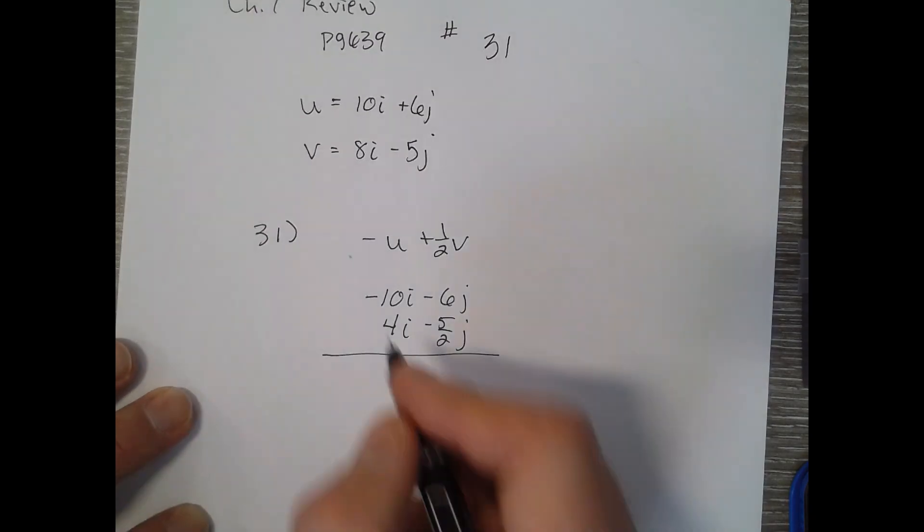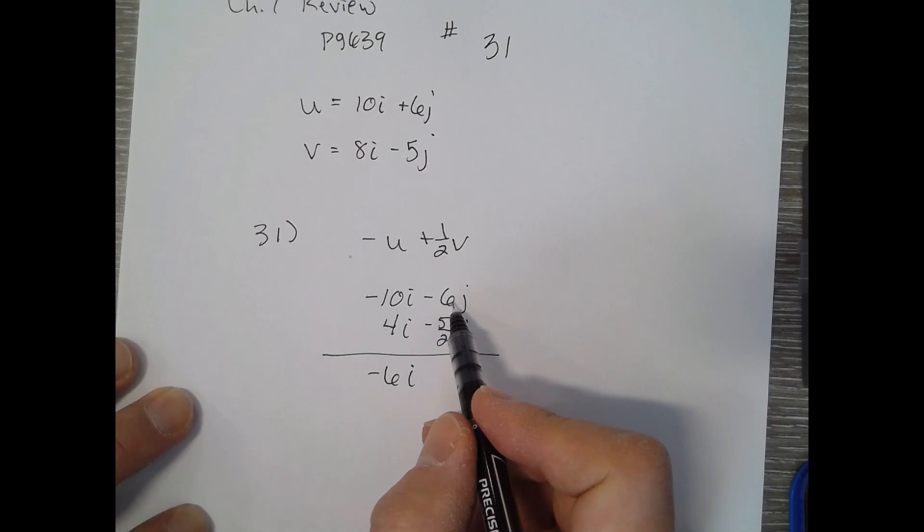And we get negative 6I. And let's see, 12 halves minus 5 halves is negative 17 halves J.